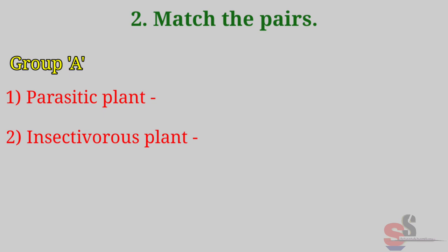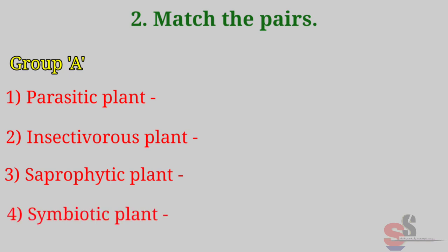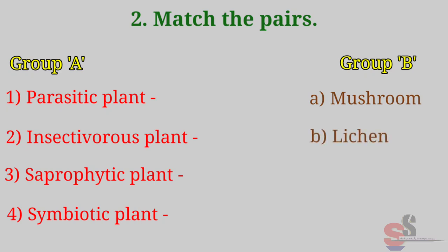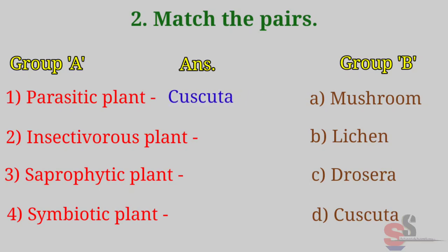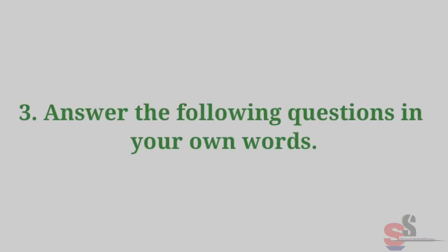Group B: A. Mushroom, B. Leecher, C. Drosera, D. Cuscuta. Answers: Parasitic plant — Cuscuta. Insectivorous plant — Drosera. Saprophytic plant — Mushroom. Symbiotic plant — Leecher.